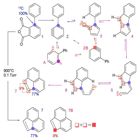Isotopic traces are some of the most important tools in geology because they can be used to understand complex mixing processes in earth systems. Further discussion of the application of isotopic traces in geology is covered under isotope geochemistry. Isotopic traces are usually subdivided into two categories: stable isotope traces and radiogenic isotope traces.